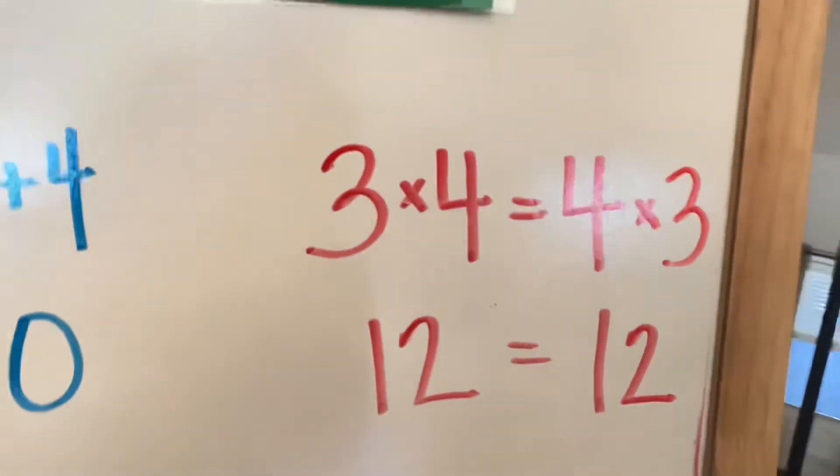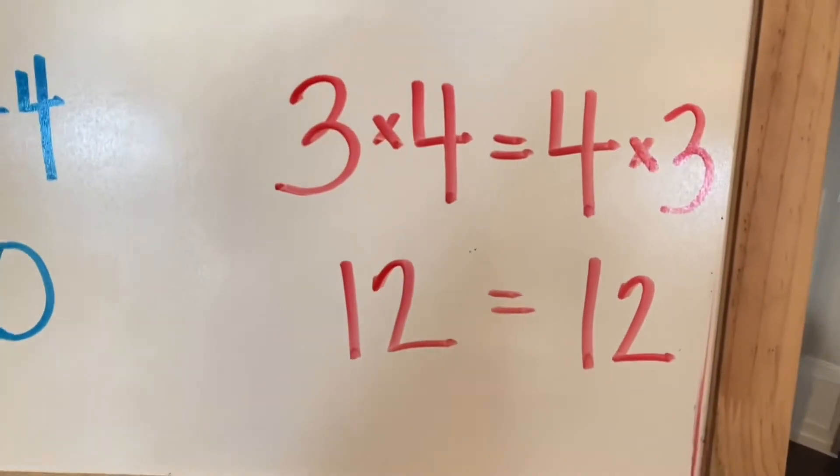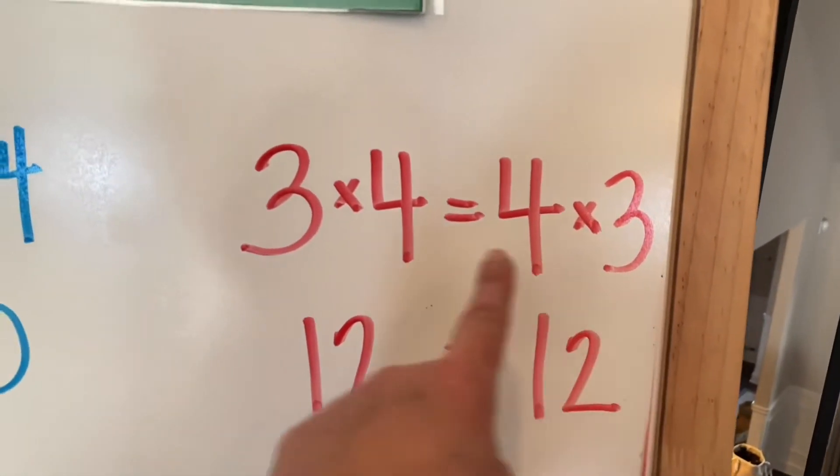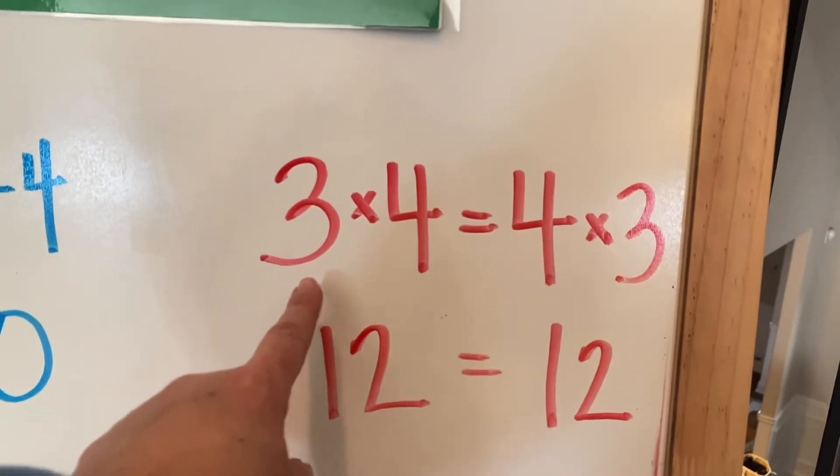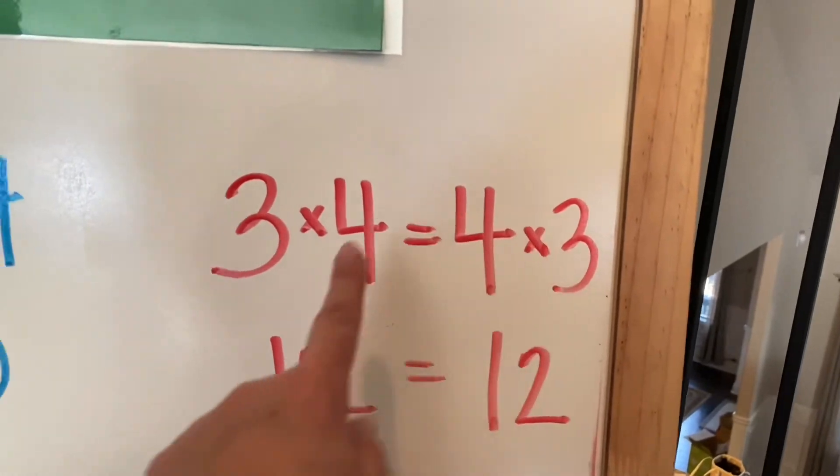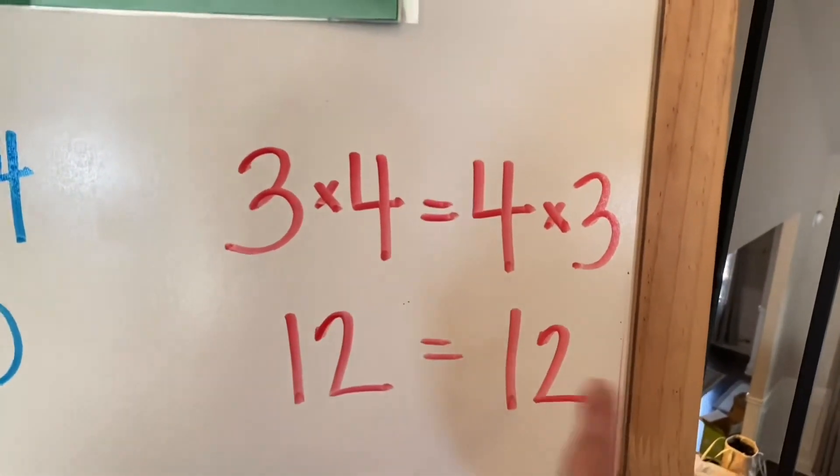Look at here. 3 times 4 equals 4 times 3. Everybody knows that 3 times 4 is 12, and 4 times 3 is the same thing. It's also 12.